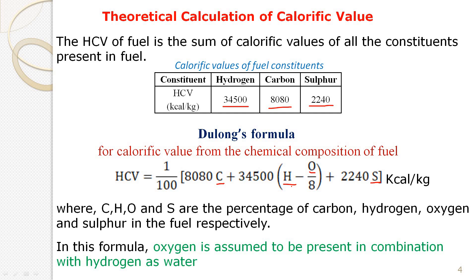The total hydrogen includes the available hydrogen for combustion and the hydrogen already in the combined state present in the fuel. So we subtract the hydrogen present in the combined state from the total value. The available hydrogen equals total hydrogen minus hydrogen in the combined state with oxygen, giving us (H − O/8), since one part of hydrogen is in the combined state with 8 parts of oxygen.